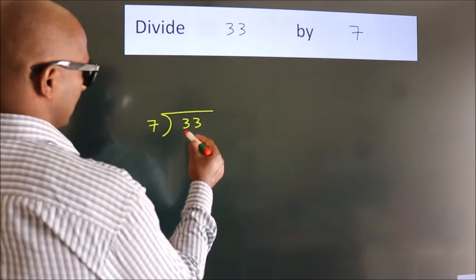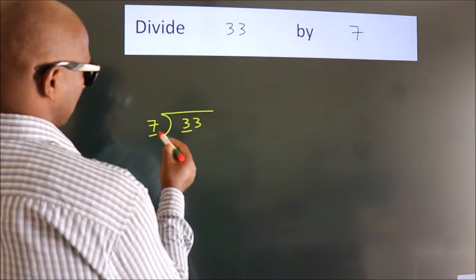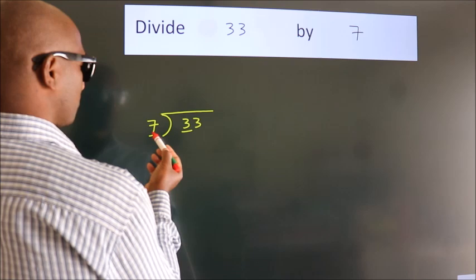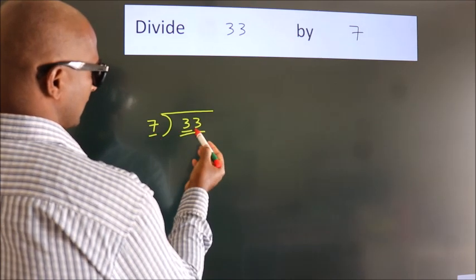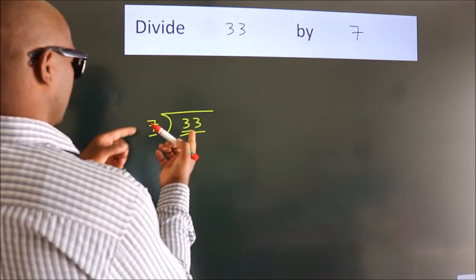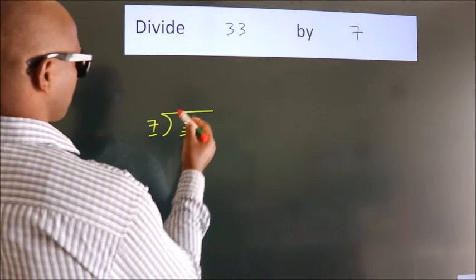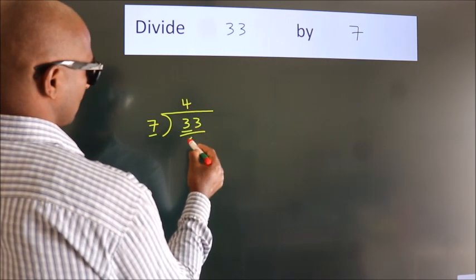Next, here we have 3, here 7. 3 is smaller than 7, so we should take 2 numbers, 33. A number close to 33 in the 7 table is 7 fours, 28.